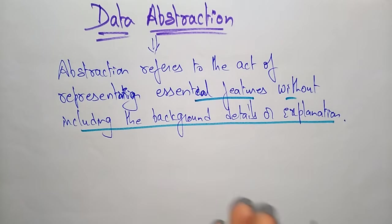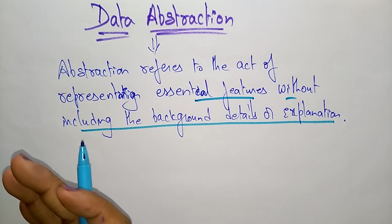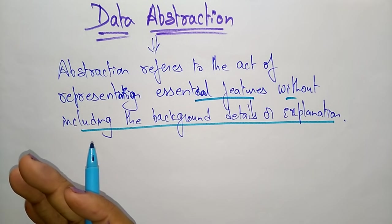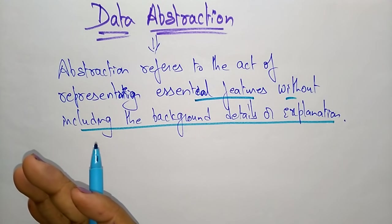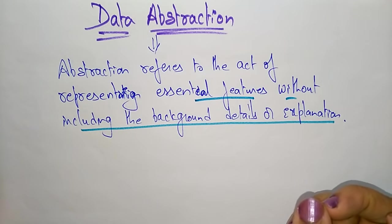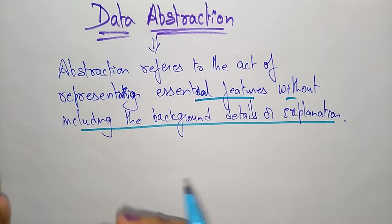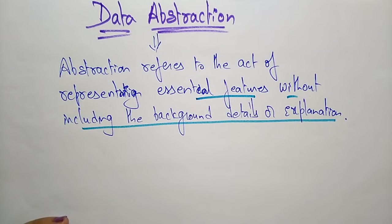Abstraction just shows you what that feature is, but it doesn't reveal the information of how the thing is developed — it is hiding the details of the background. Whereas encapsulation means the data is only accessed by the methods and functions which are wrapped in a class, so outside the class the data is not visible. In abstraction, it is the act of representing essential features without including background details, meaning it is hiding the background details, whereas in encapsulation the data is completely hidden.